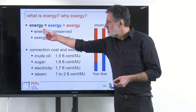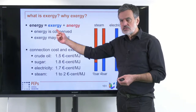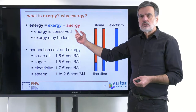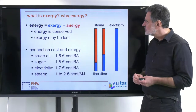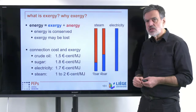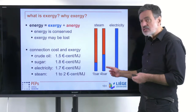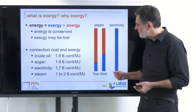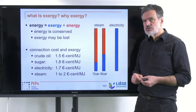The energy that we have consists on one hand of that freely convertible exergy and the so-called anergy. To explain that, here's an example: if you have steam at different pressure levels — superheated steam, which is quite frequent in the chemical industry — and compare that to electricity.